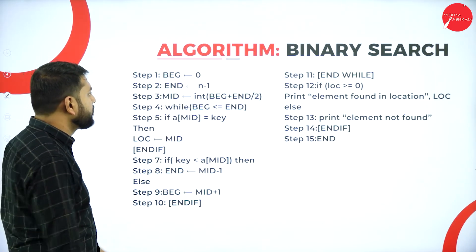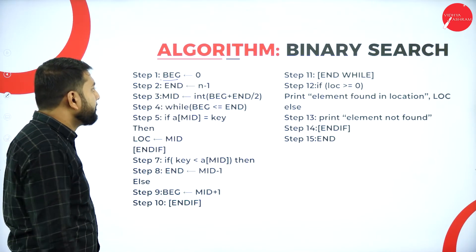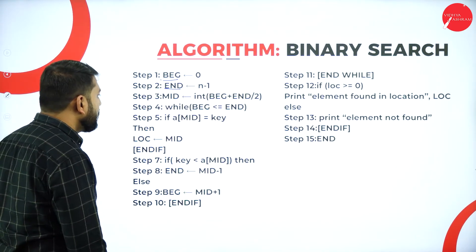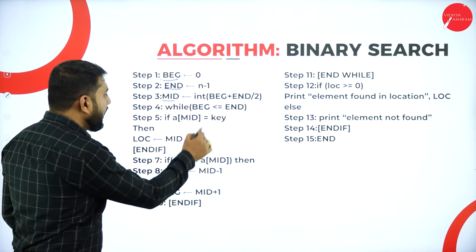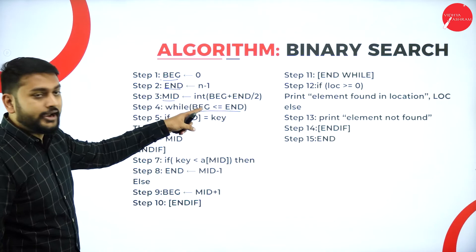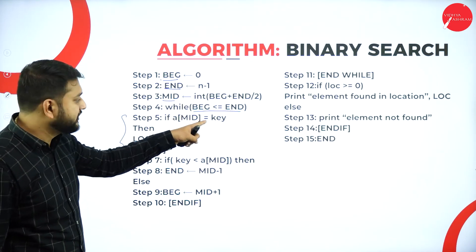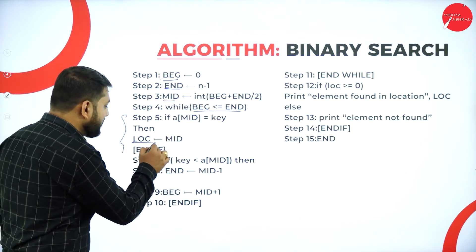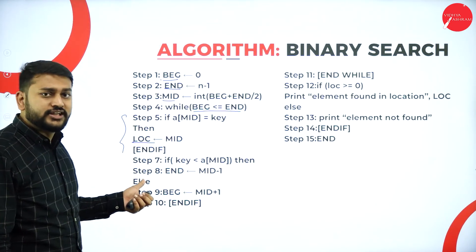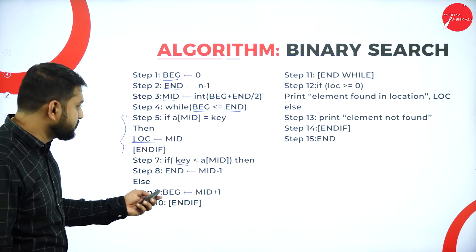Let me explain the algorithm quickly. Instead of 'lower bound' and 'upper bound,' the algorithm uses 'beginning' and 'end,' where end = n minus 1 since arrays start from zero. The mid value is calculated as (beginning + end) / 2. The loop condition is: beginning must be less than or equal to end. Within the loop, if the mid value equals the key, the position is stored.